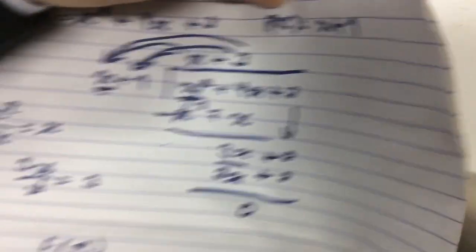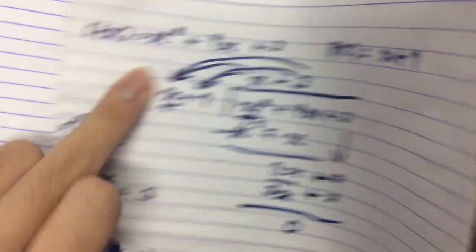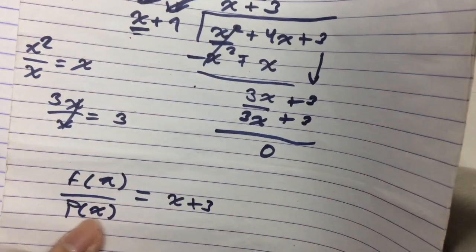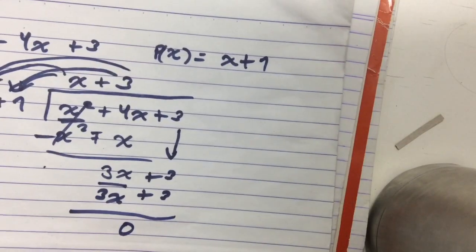Let me show you the summarized version. Given that this polynomial function is denoted by f(x) and this one over here is denoted by p(x), if we divide f(x) by p(x), we get the quotient over here which is x plus 3.